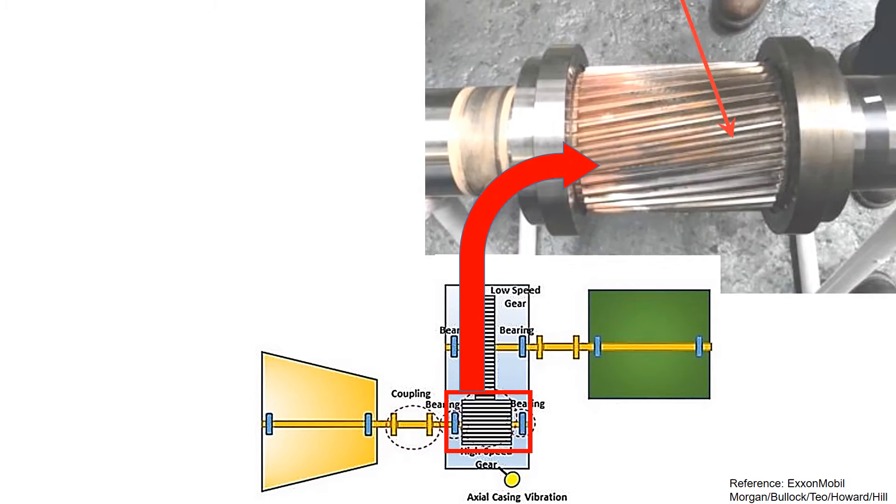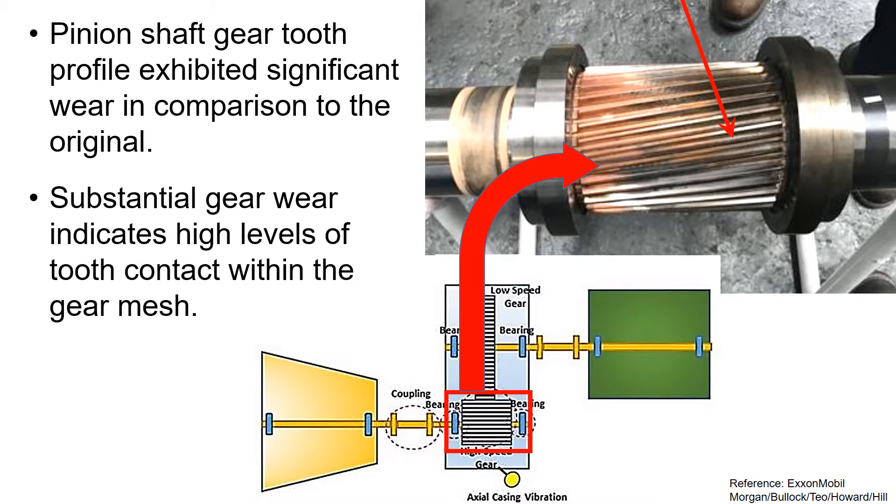During the disassembly of the gearbox for root cause analysis, pinion gear tooth profile exhibited significant wear in comparison to its original. Substantial gear wear indicates high levels of tooth contact within the gear mesh.